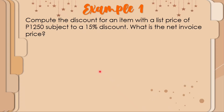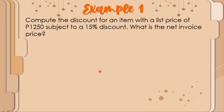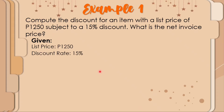Let us apply this in a problem. Compute the discount for an item with a list price or selling price of 1,250 pesos subject to a 15 percent discount, and find the net invoice price. The given are: list price = 1,250 pesos and discount rate = 15 percent.